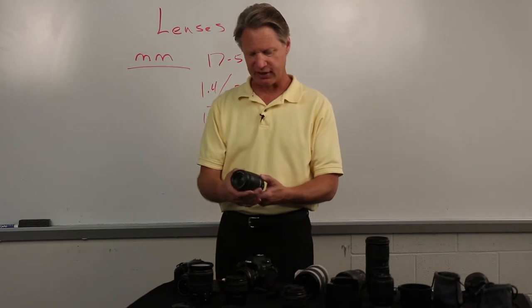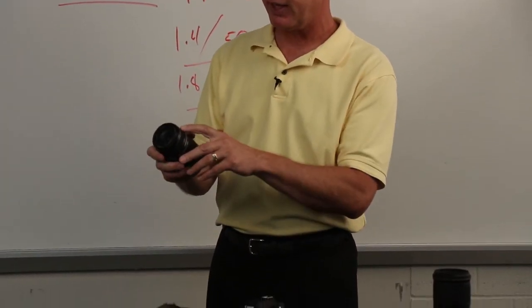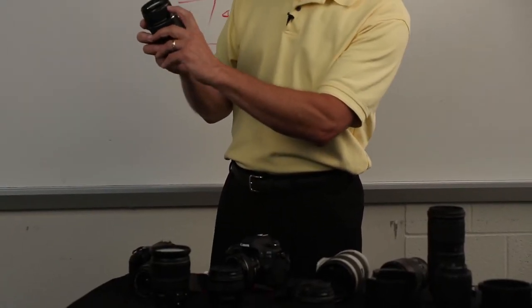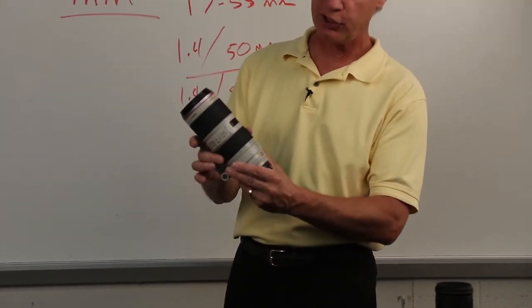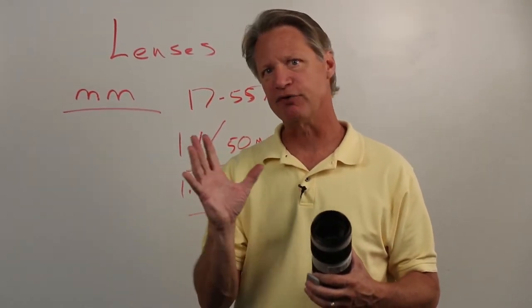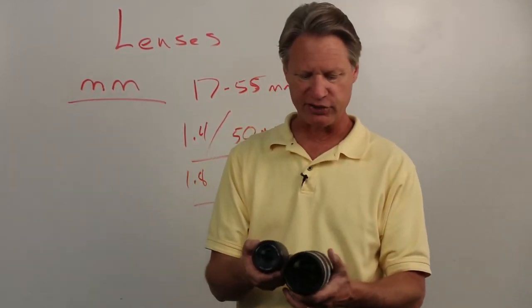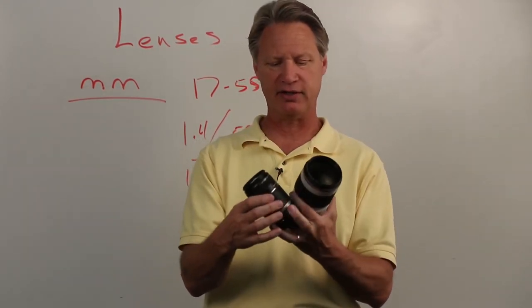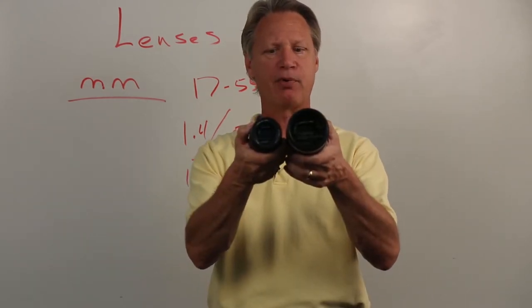Let's look at a couple of more expensive lenses. This kit lens is a 55-250 — pretty good, nothing really wrong with it, but it's a variable aperture at f/4 to f/5.6. Compare that to this 70-200, which is a constant f/2.8 — the aperture never changes throughout the entire zoom range. So very similar zoom ranges, 70-200 vs 55-250, but obviously very different in physical size, performance, and f-stop range.